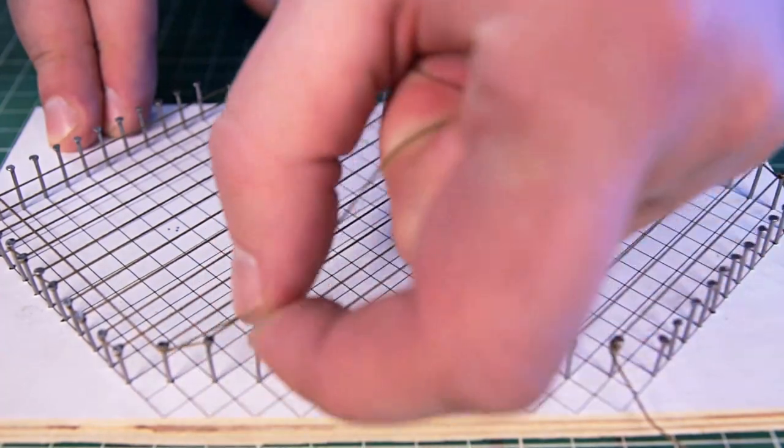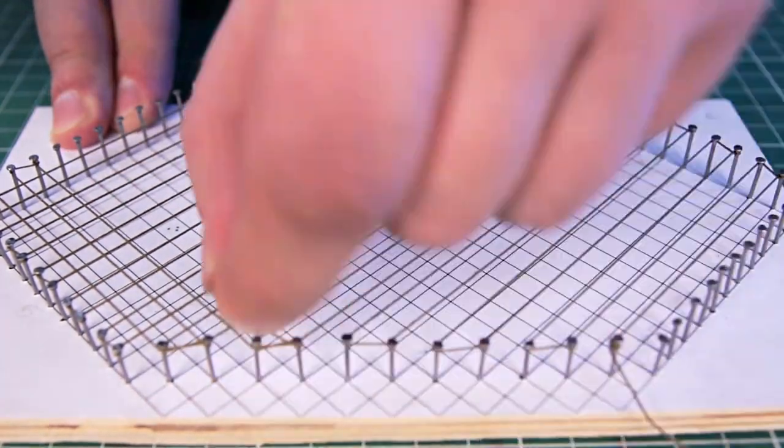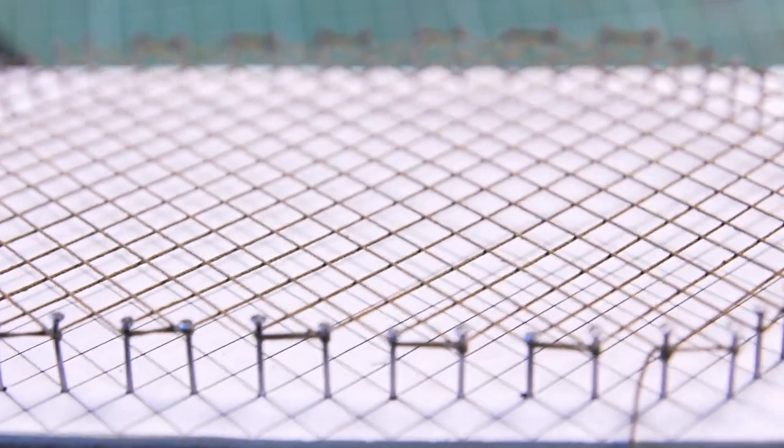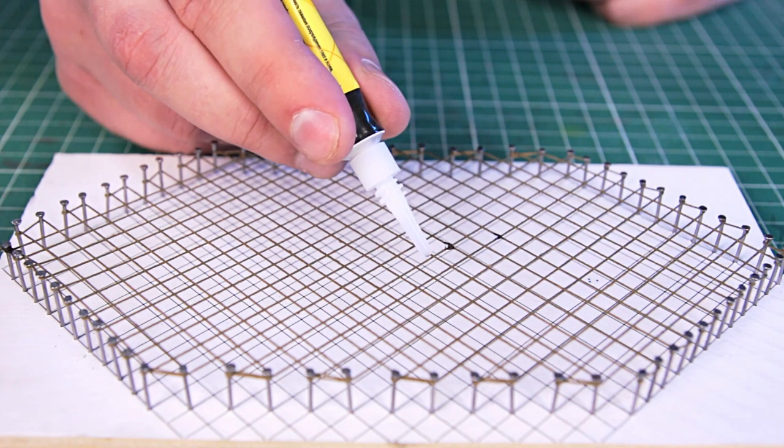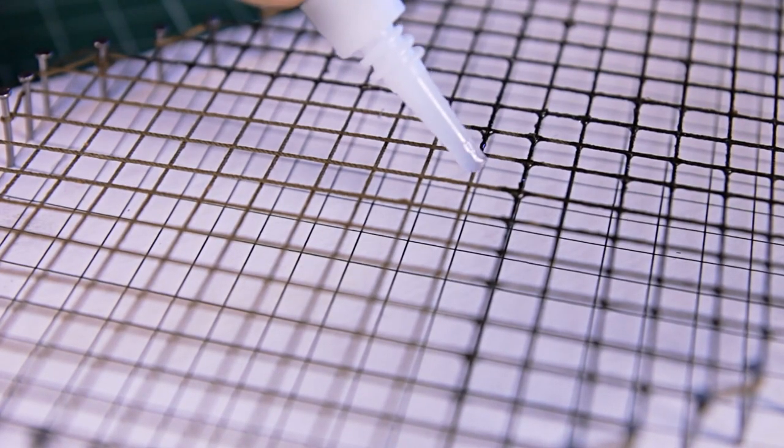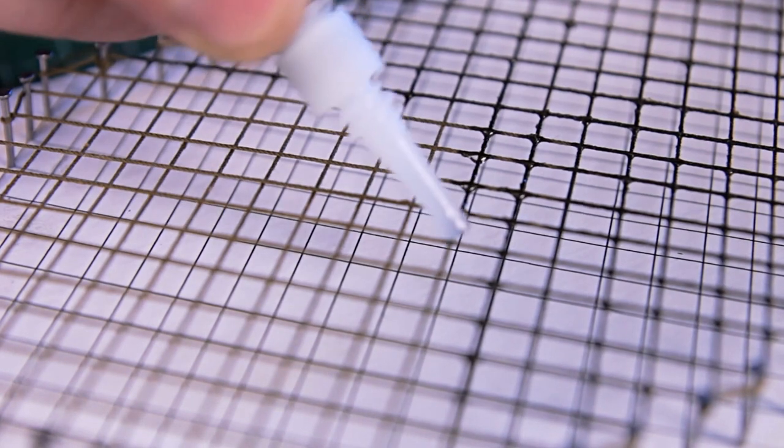The most important thing is to always keep the thread taut as a string. If everything is done correctly, the cells will be very even. Now I will dab all the threads with super glue. The threads absorb the glue well and after that they become quite hard.